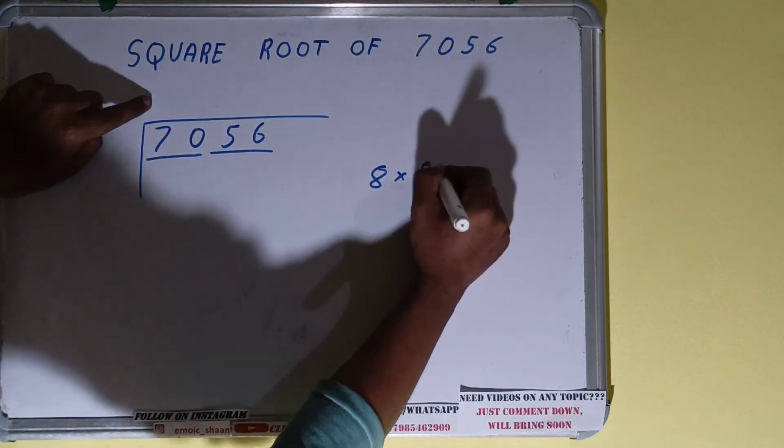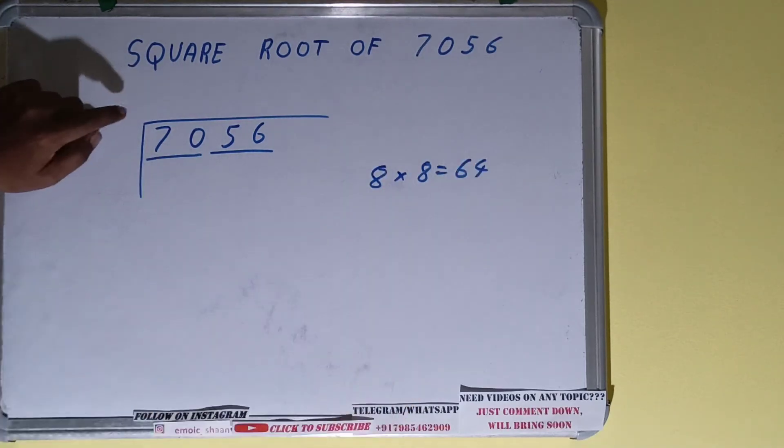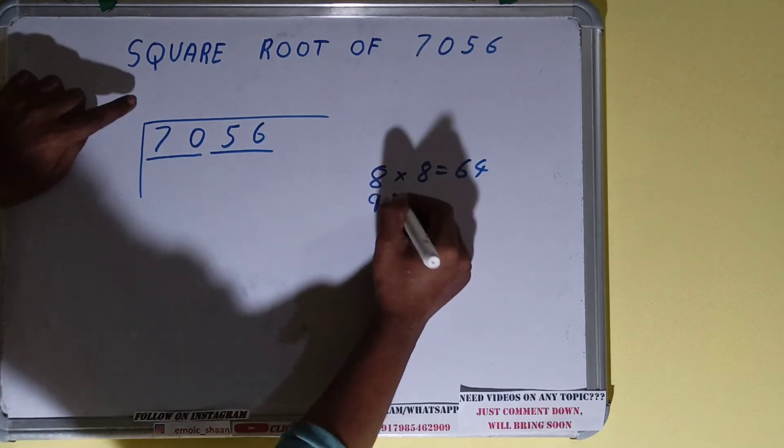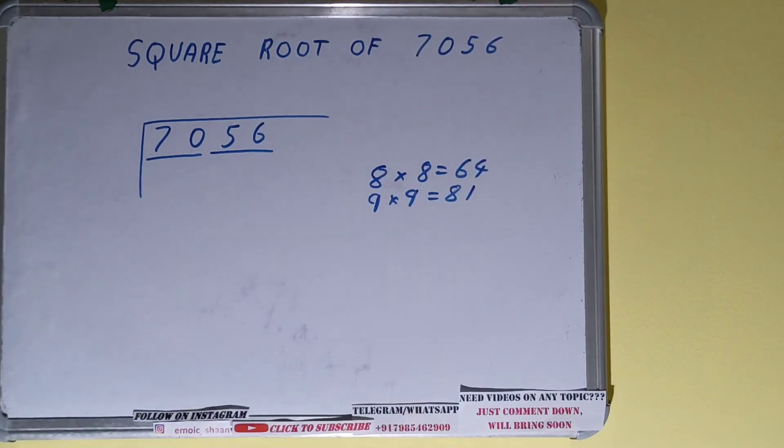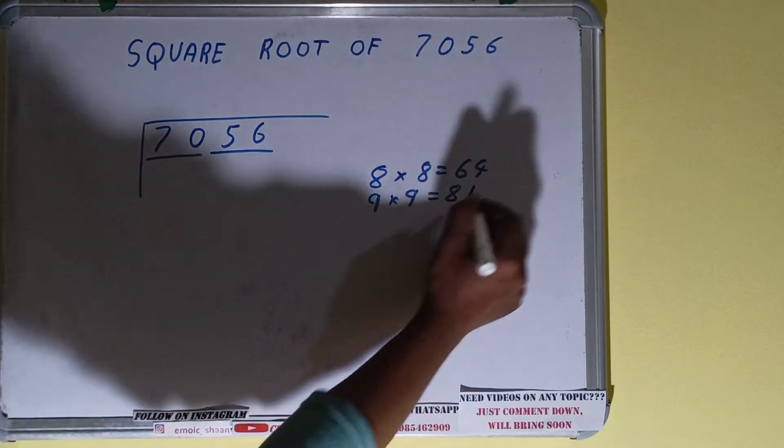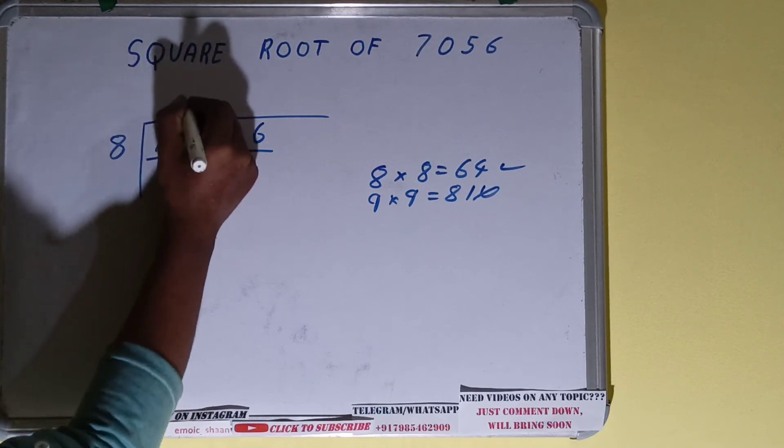It will be 64. If we use 9 here, we have to use 9 here also. It will be 81. Now we cannot use 9 because 81 is greater than 70. We have to use 8. Okay, so 8 here and 8 here.